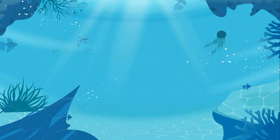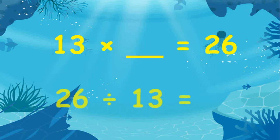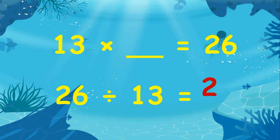Another example is 13 times blank equals 26. What is the missing number? When there is a multiplication sign, you will divide 26 and 13, and the answer is 2. Therefore the missing number is 2.